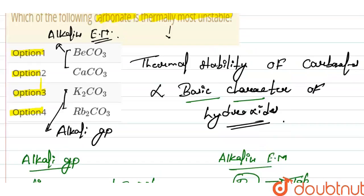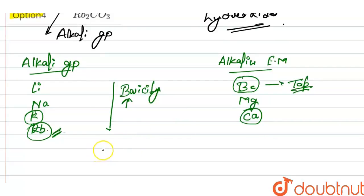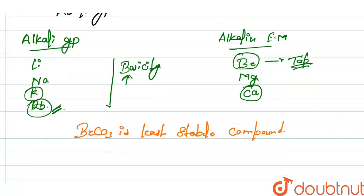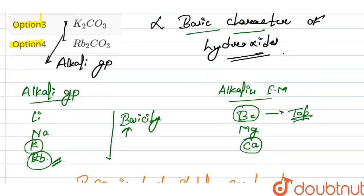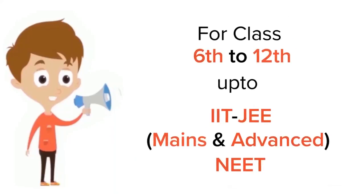So BeCO₃ is less stable than the other elements because beryllium is present at the topmost position in the alkaline earth metal group. We can say that BeCO₃ is the least stable compound. Therefore, option four, Rb₂CO₃, is the most thermally stable. Thank you.